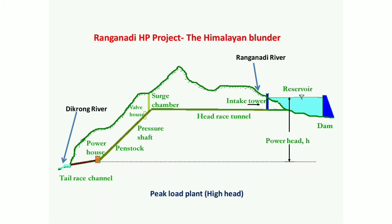The project could have been designed in a cascade manner without diverting the water to the Dikrong River. That means water could have been released to the same river after producing power, which could have actually maintained the flow.